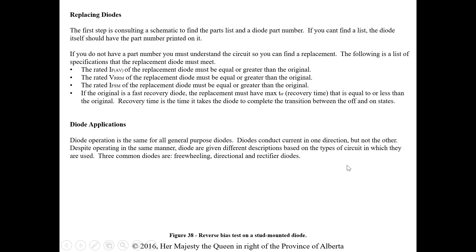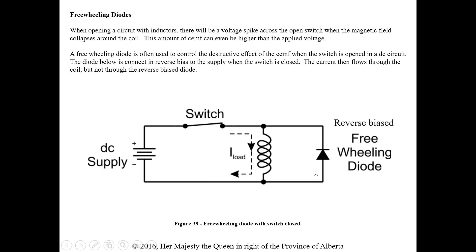Despite operating in the same manner, diodes are given different descriptions based on the types of circuits they're used in. Three common types are freewheeling, directional, and rectifier. Freewheeling diodes — when opening a circuit with inductors, there will be a voltage spike across the open switch when the magnetic field collapses around the coil. This CEMF can be even higher than the applied voltage. In a DC circuit, the coil builds a magnetic field that stays magnetized until the switch opens, then the field collapses and sends voltage back into the circuit, potentially arcing across the open switch and destroying components.